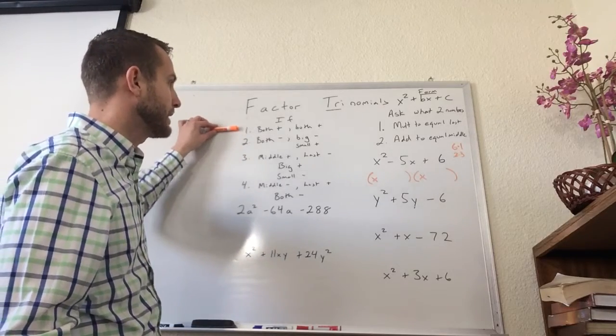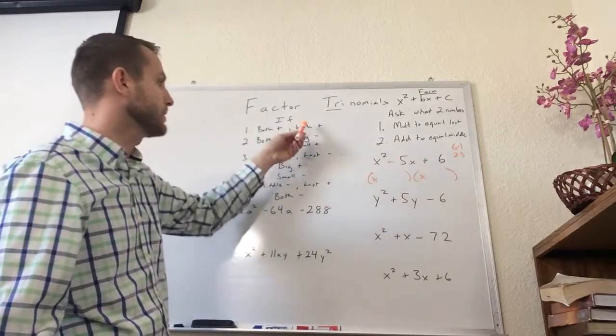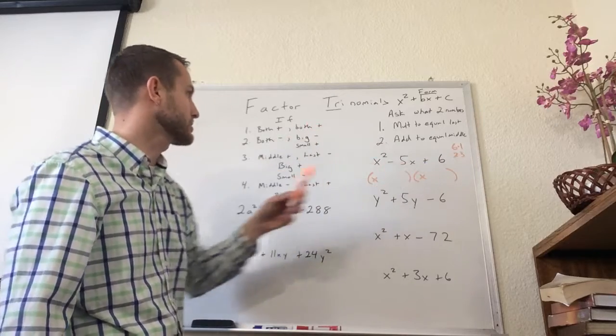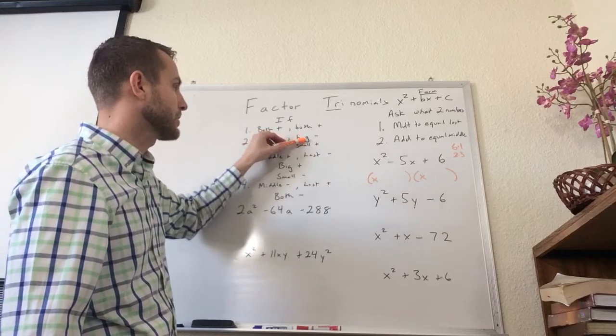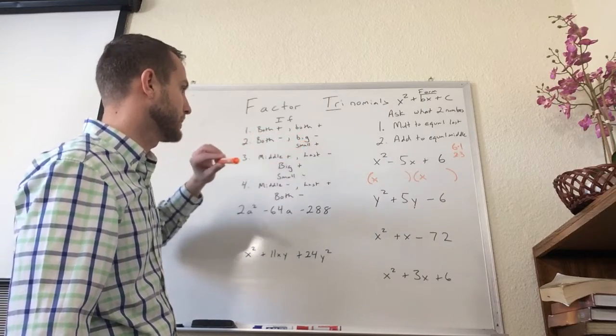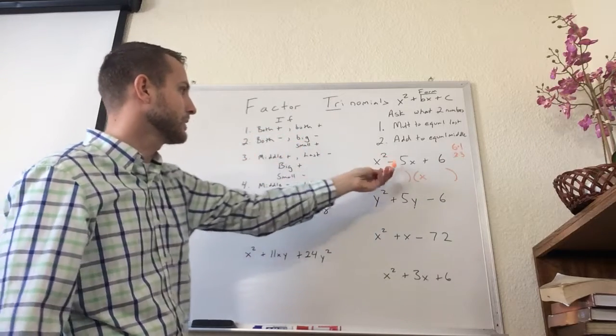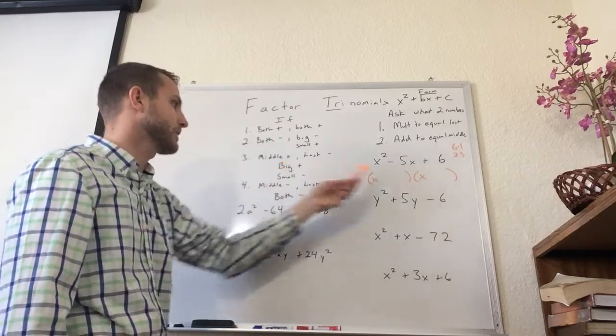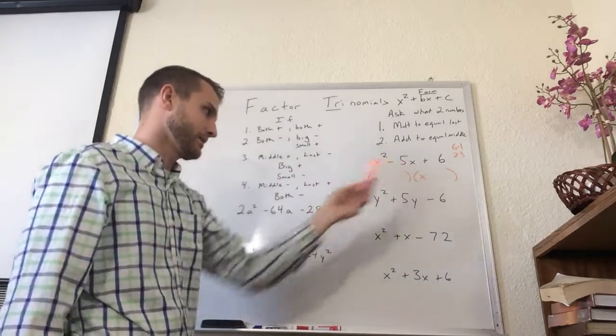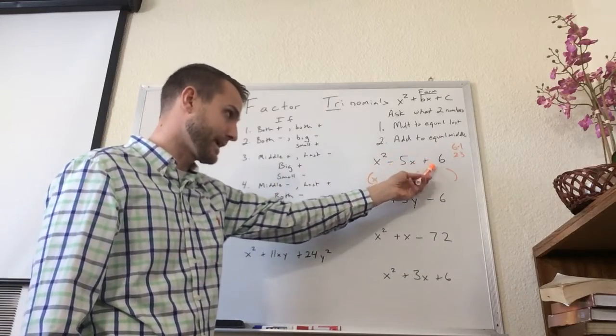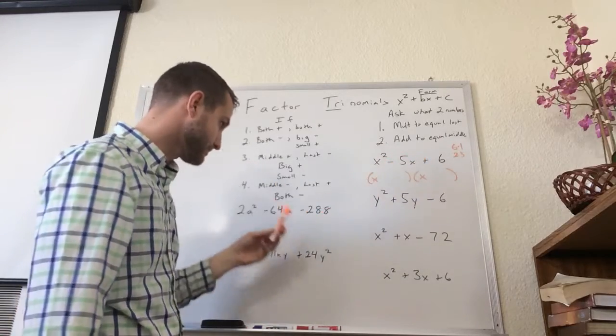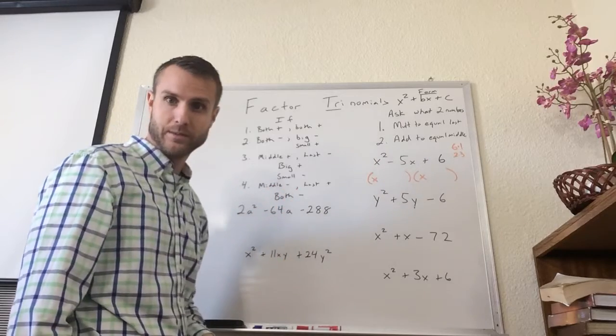One, if both of my terms are positive, then both of the inside will also be positive. If they're both negative, then the bigger term will be negative and the smaller term will be positive. If the middle is positive and the last is negative, then the bigger number inside will be positive and the smaller one will be negative. If the middle is negative and the last is positive, like here, that means they're both going to be negative.